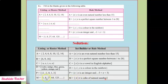All are cubes of natural numbers. 1 × 1 × 1 = 1, 2 × 2 × 2 = 8, 3 × 3 × 3 = 27, 4 × 4 × 4 = 64, 5 × 5 × 5 = 125. All are cubes of natural numbers.